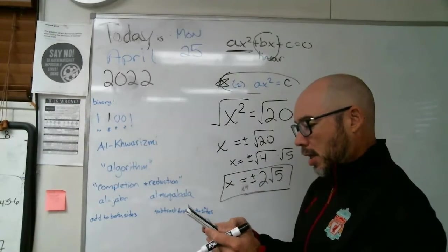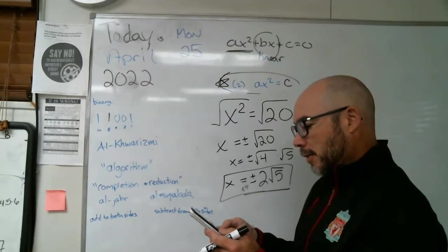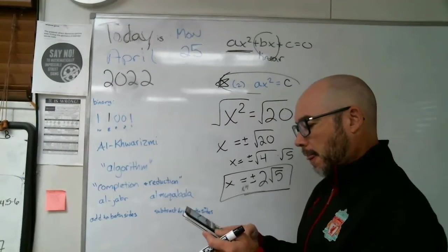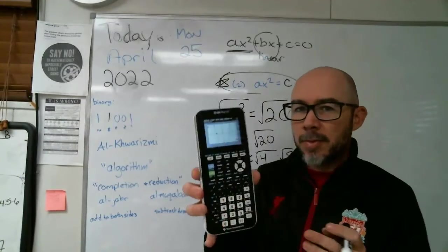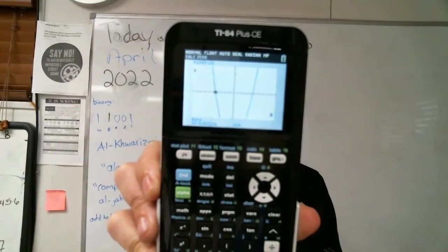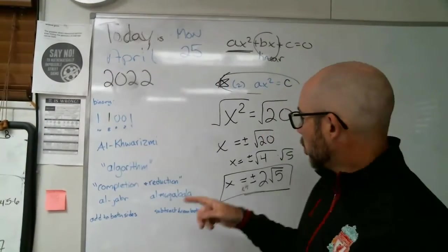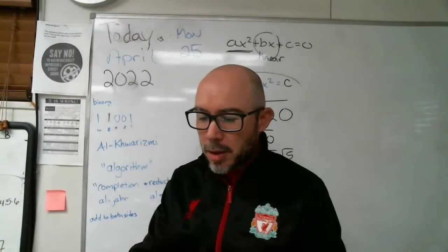And if I go to my zeroes and I go find the one on the left, okay. And I ask it for what it is and it gives me negative 4.47 or more specifically, negative two roots of five.